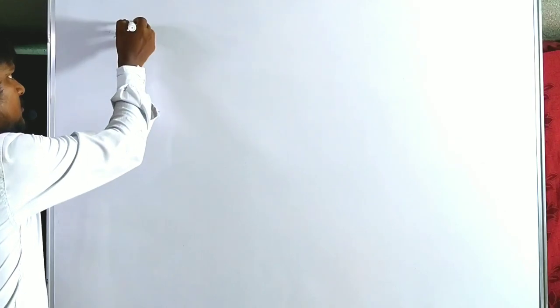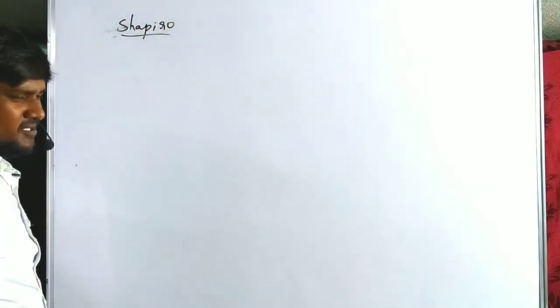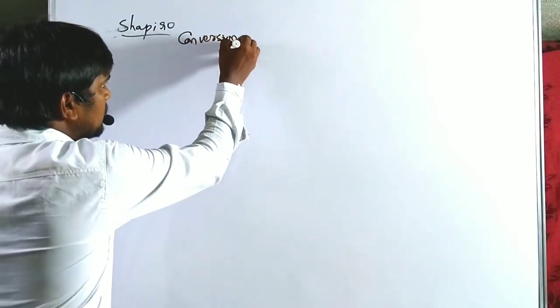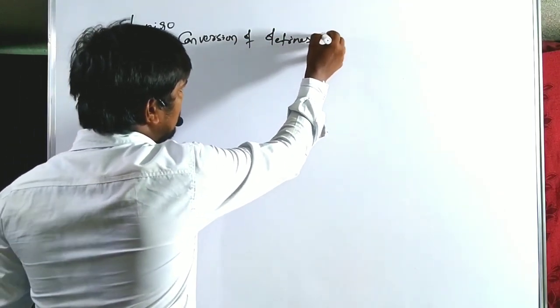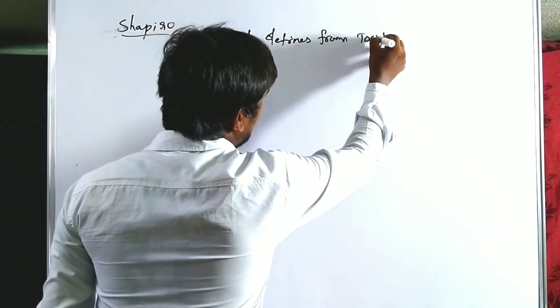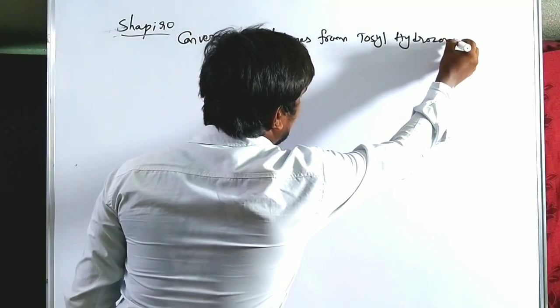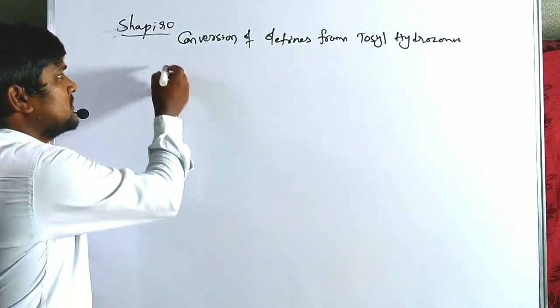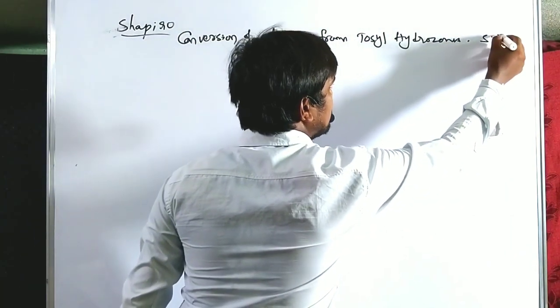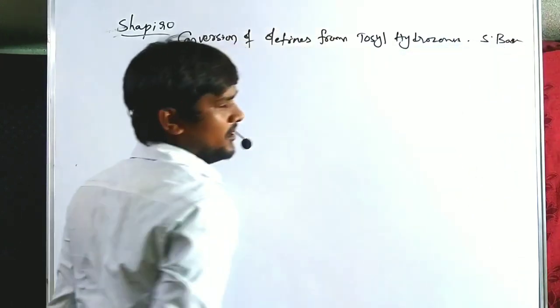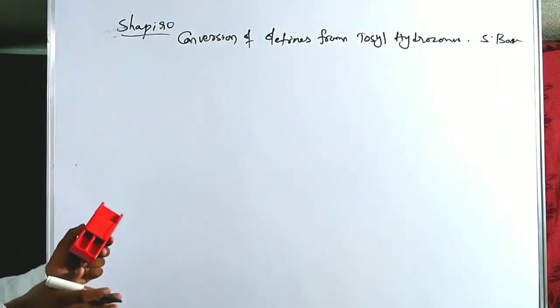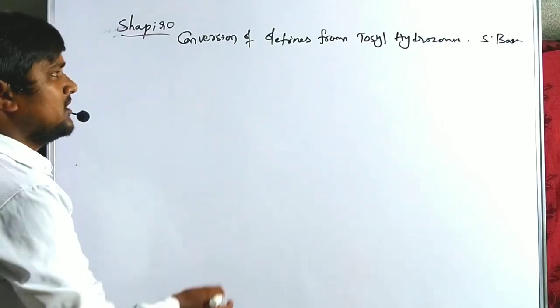Hi guys, welcome to the RPP Resilience Commission. Now we have to discuss about advanced named reactions, lecture number 1. Lecture number 1 is included on the Shapiro reaction. Generally, the Shapiro reaction is nothing but the conversion of olefins from tosyl hydrazones in presence of strong and active bases — this is said to be the Shapiro reaction.